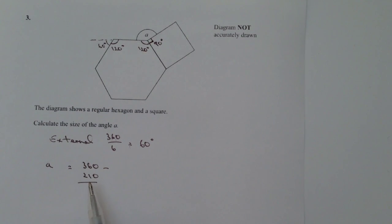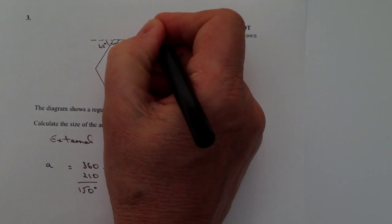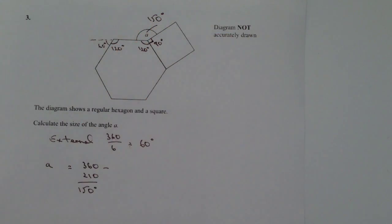Which is the sum total of the 120 plus 90. And that will give me then the value of a is 150 degrees. So this angle is 150 degrees.